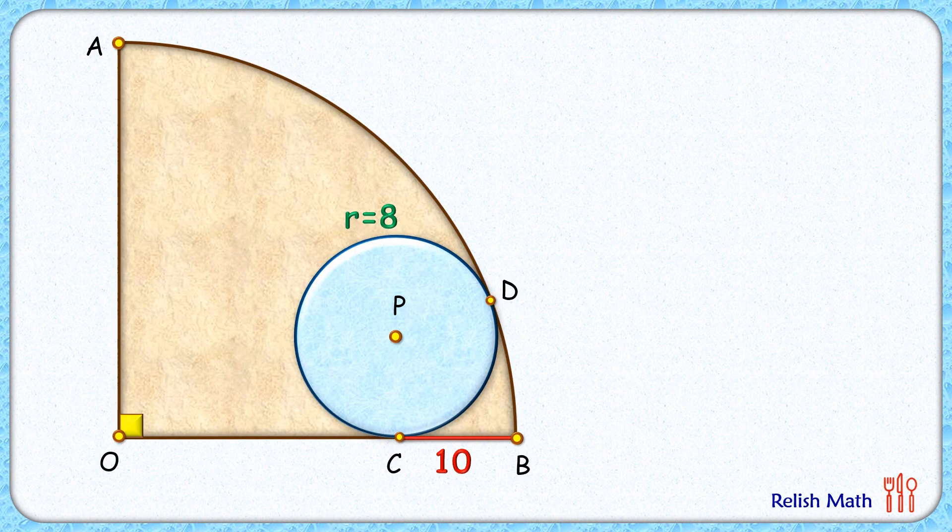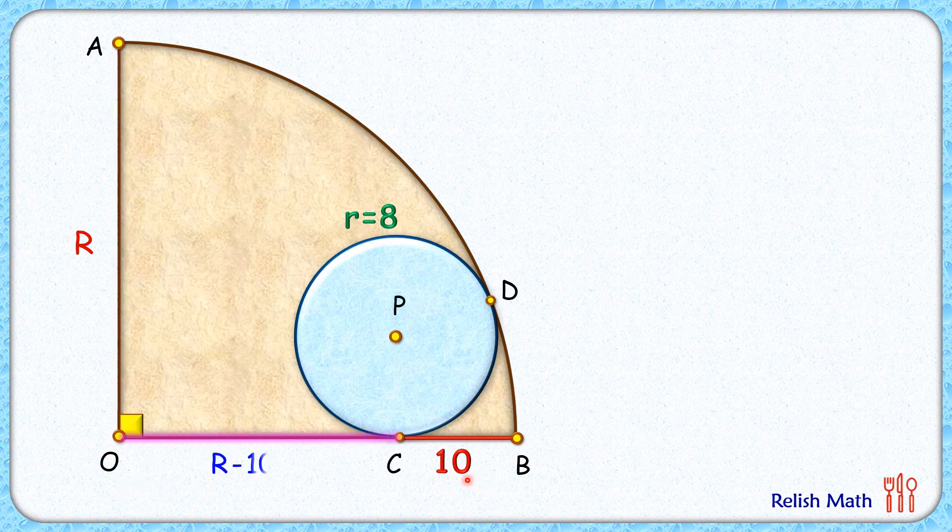Let's check this simple and elegant solution. Let's assume the radius of this quadrant is R centimeters, and thus OC length will be the full length R minus 10.